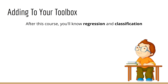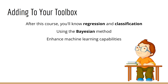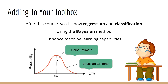After taking this course, you'll have two very important tools in your toolbox — you'll know how to do both regression and classification using the Bayesian method. The Bayesian method is a powerful set of tools that enhances the capabilities of machine learning. Traditional machine learning uses point estimates — you make a best guess about your model parameters — but Bayesian machine learning allows you to consider all possible values of those parameters and weight them by their likelihood. So if you're interested in adding this powerful tool to your data science repertoire, this course is for you.